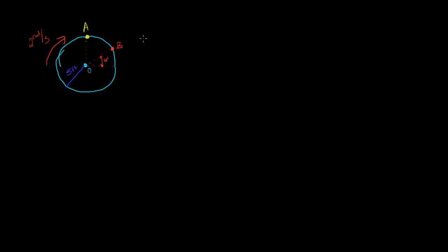We want to figure out the velocity of A and the velocity of B. We know we have rotation about a fixed point O, so everything rotates around O. The velocity is tangential to the circular path. Point A will have a velocity pointing in one direction and point B will have a velocity tangential to its circular path as well.